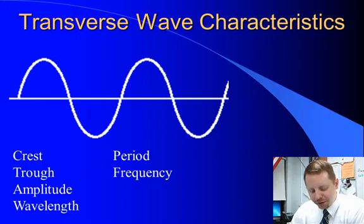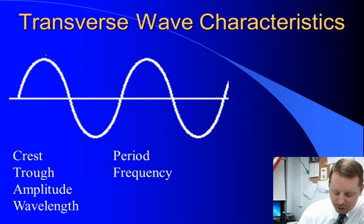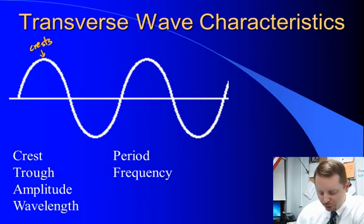If we have a transverse wave, we can label a number of points on the wave. The high points, or peaks, we call crests. And the low points, we call troughs.